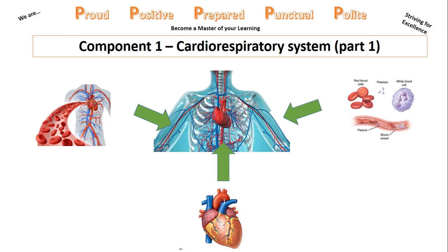Hello everyone and welcome to the next GCSE PE video podcast for Edexcel. Today we're going to be looking at component 1, part 1 of 2, linked to the cardiorespiratory system. In today's video we're going to be looking specifically at the cardiovascular system — how the heart functions, the structure and functions of the cardiovascular system, and the different types of blood cells and blood vessels. Make sure you've got your notes by your side and feel free to pause and rewind the video at any time.